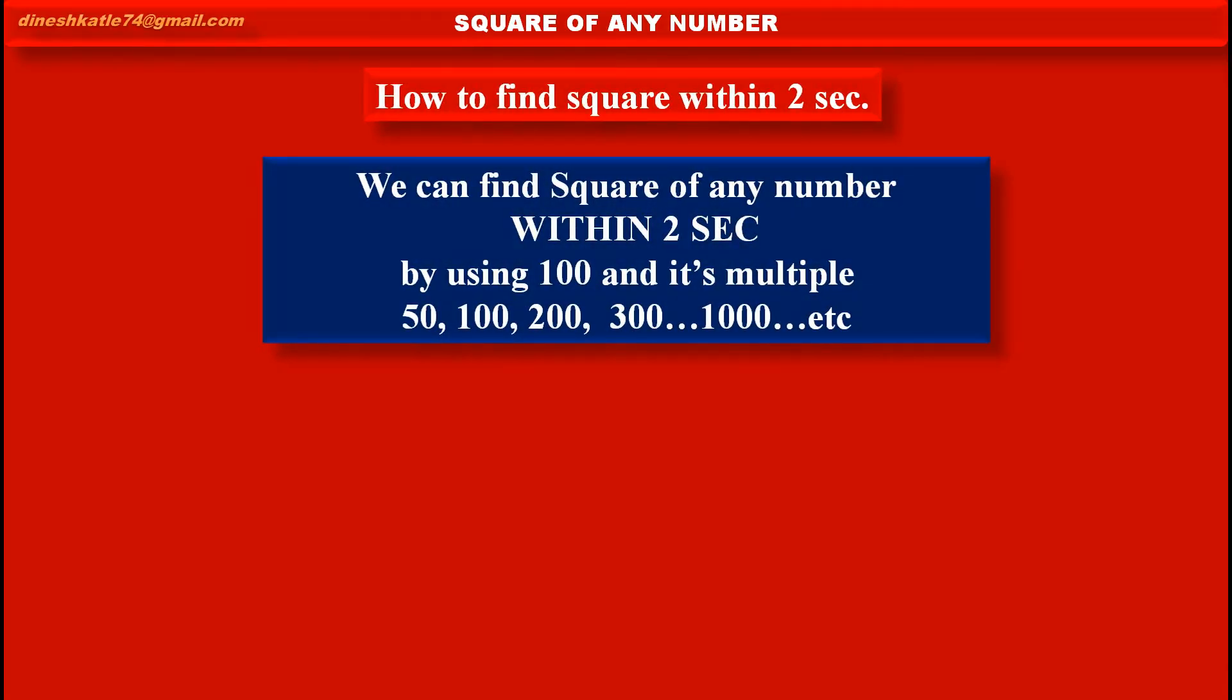Now, we can find square of any number within 2 seconds by using 100 and its multiples: 50, 100, 200, 300, 1000. By using such values, we can find square of any number.